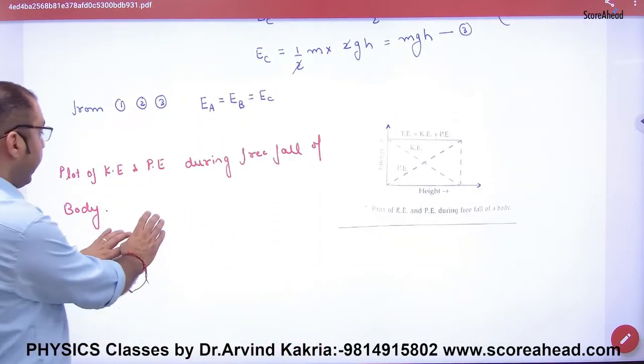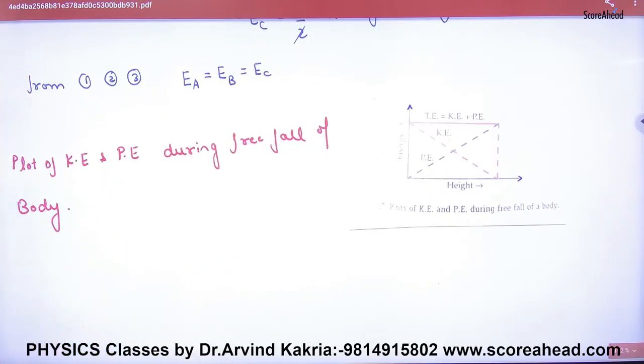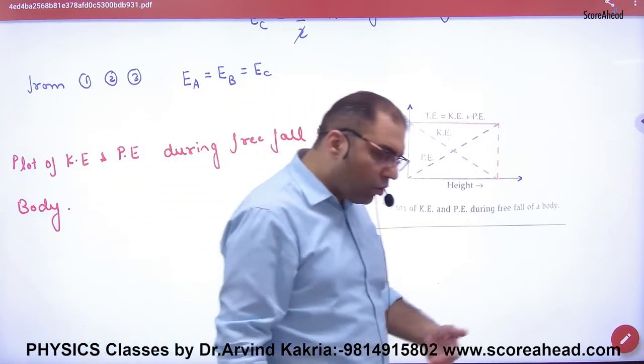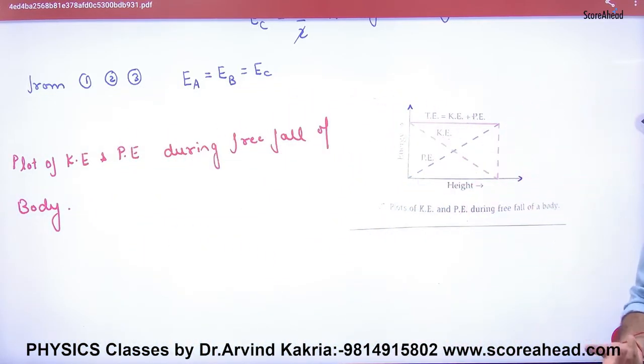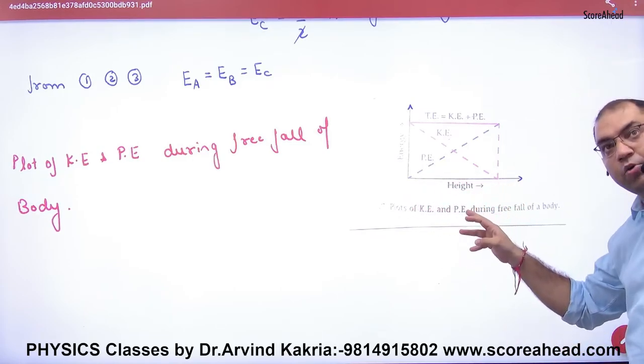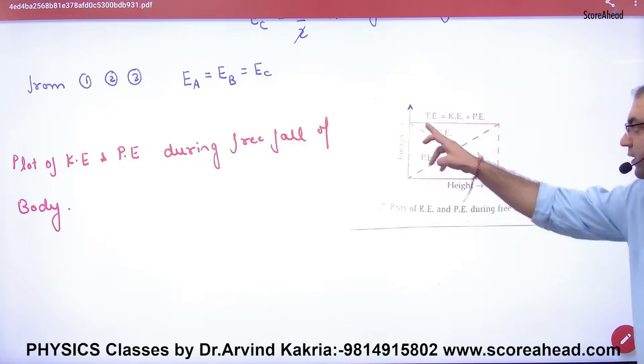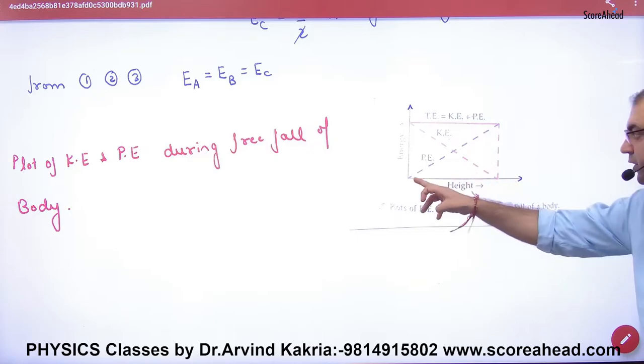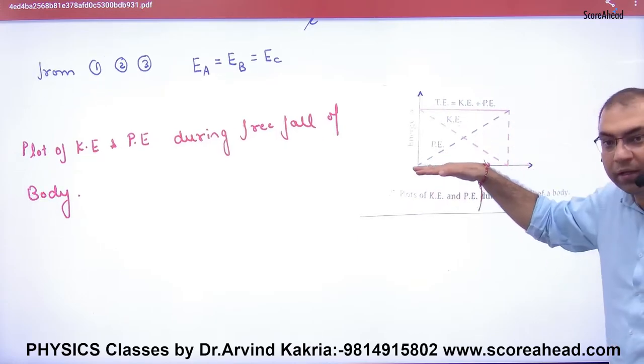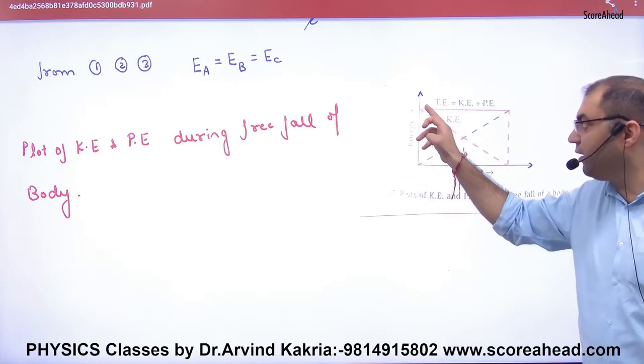Now, plot a graph of kinetic, potential, and total energy during free fall. Total energy is constant. When height is at the topmost point, what will be kinetic? Zero. What will be potential? Maximum. When height is lower, potential will fall to zero and kinetic will increase to maximum.